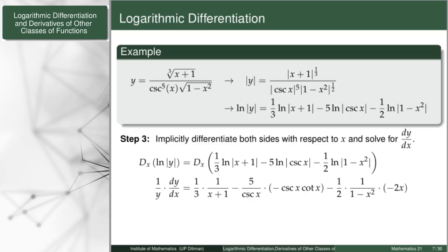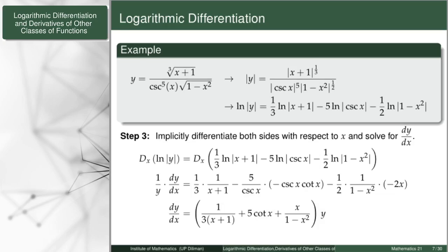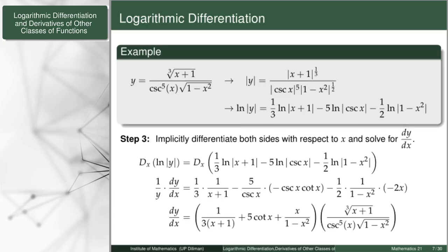We are almost done, as we still need to solve for dy/dx by implicit differentiation — that is, to multiply both sides by y. Sometimes it is required to write our derivative fully in terms of x. The good thing is that y can be expressed in terms of x, and by rewriting it, I will find the full derivative dependent only on the variable x.